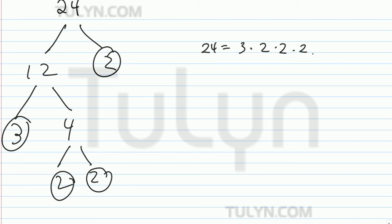So then we can rewrite this as 24 equals 3 times 2 to the third power. Done.